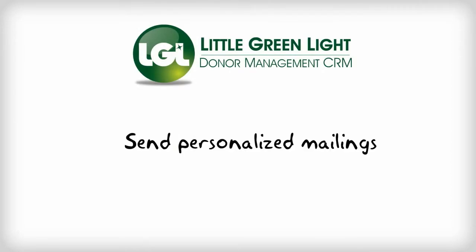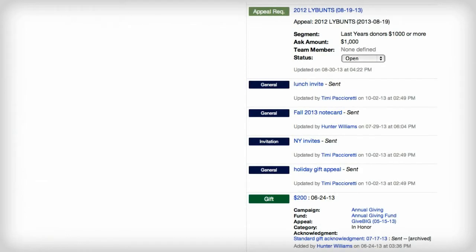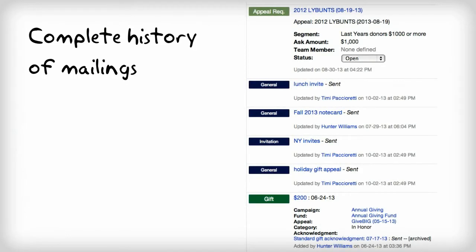The ability to create personalized mailings or emails right from LGL really streamlines your workflow. By using LGL's built-in mailings functionality, you can track the mailings each constituent receives and store it as an activity in their constituent record. There's no need to guess if someone received your last newsletter or was sent an acknowledgement letter for their last gift. With LGL, that information is available right at your fingertips.